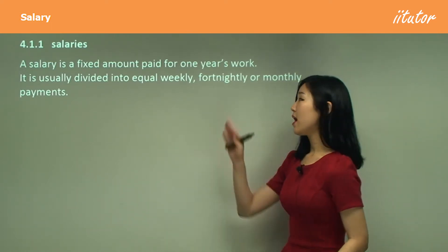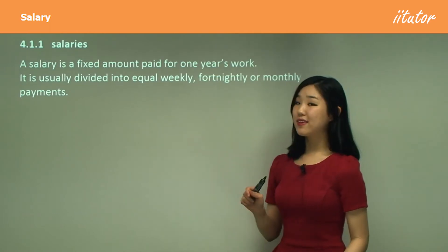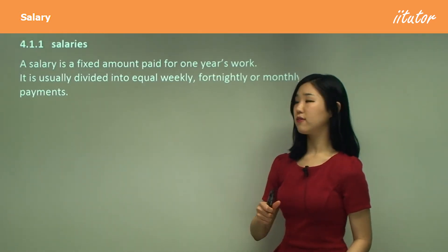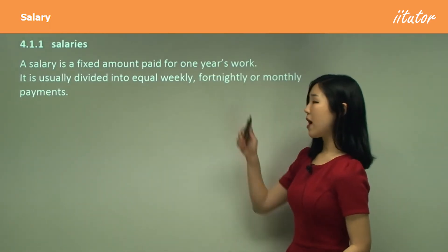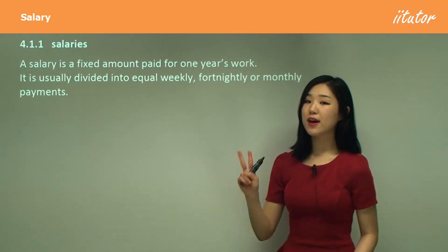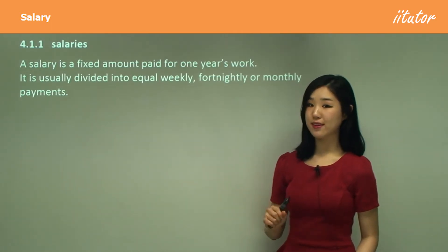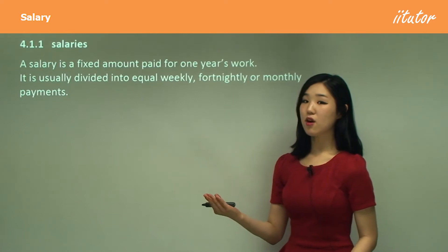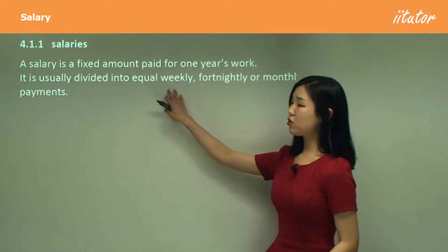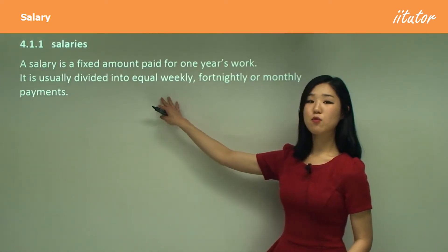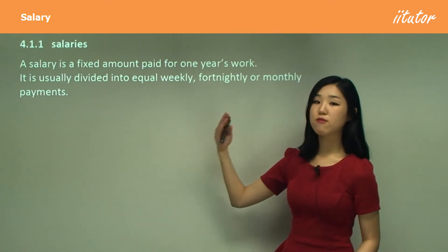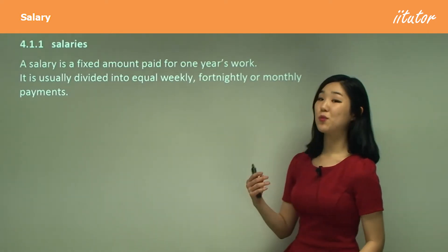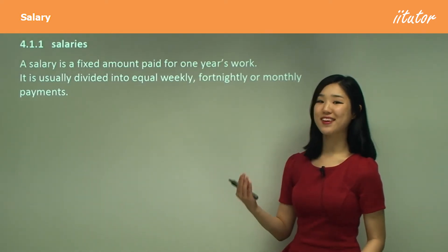So guys, tell me, how many weeks in a year? 52 — you should all know this. And how much is a fortnight? A fortnight is two weeks. So how many fortnights in a year? Well, there's 52 weeks in a year, so fortnightly would be 52 divided by 2, which is 26. So there's 26 fortnights in a year.